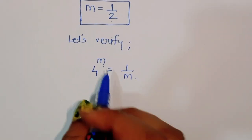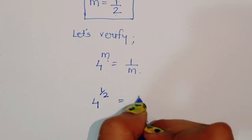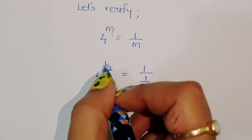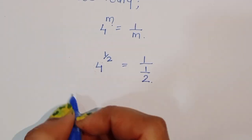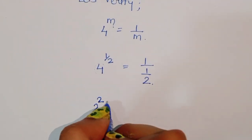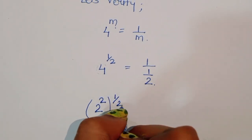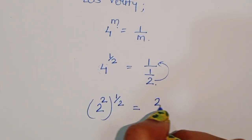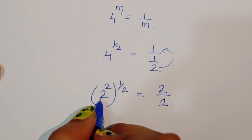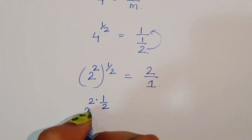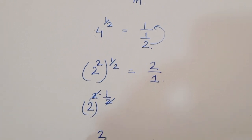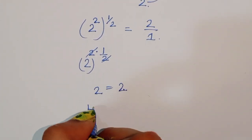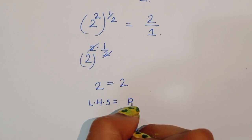So, 4 power 1 upon 2 is equal to 1 upon (1 upon 2). We convert 4 into 2 power 2, so 2 power 2 times 1 upon 2. The 2 and 1/2 cancel, giving 2 power 1, which is 2. And 1 upon (1 upon 2) is 2. So 2 is equal to 2, and LHS is equal to RHS.